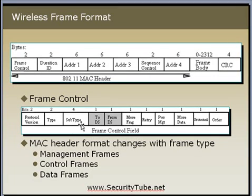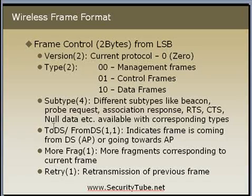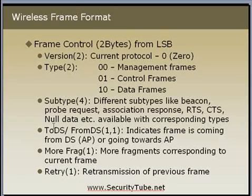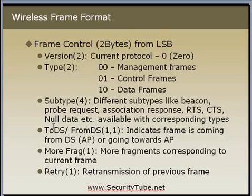Next comes the two-bit Type field and the four-bit Subtype field. IEEE has divided wireless frames into three types: Management type, Control type, and Data type. Each type has its own subtypes. Management subtypes include beacon frames, probe request, probe response, authentication request, and authentication response. Control subtypes include RTS, CTS, acknowledgement, and CF-Poll. Data frame subtypes include pure data, QoS data, and so on.